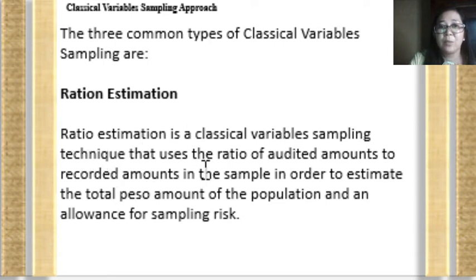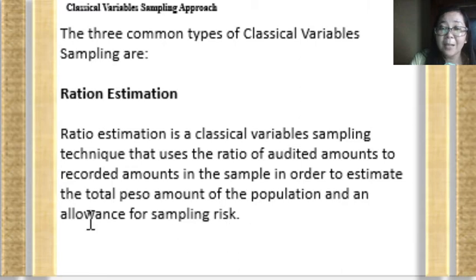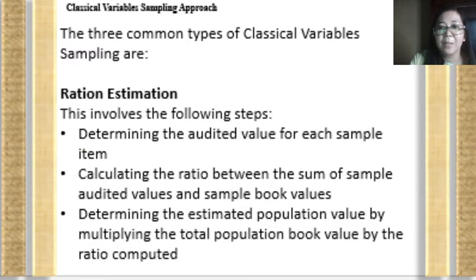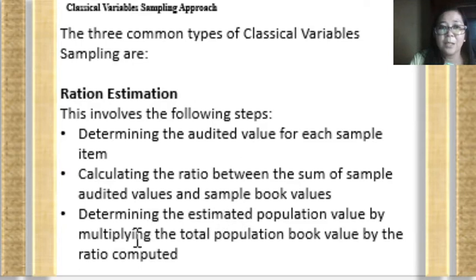There are three common types of classical variable sampling. The first is ratio estimation, which uses the ratio of the audited amounts to the recorded amounts in the sample to estimate the total audited amount of the population and the allowance for sampling risk. This approach is most appropriate when the size of the misstatement is proportional to the book values of the items. The steps involve: determining the audit value for each sample item, calculating the ratio of the sum of audited values to the sum of book values in the sample, then multiplying the total population book value by that ratio.